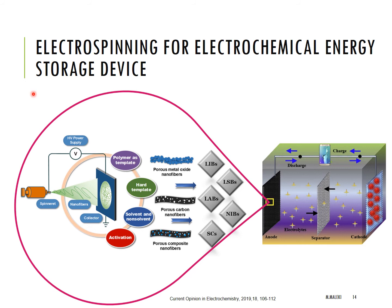We will now look at some slides showing energy applications of the electrospinning method. Electrospun nanofibers and composites are used in various electrochemical energy storage systems, such as lithium-ion batteries, lithium-sulfur batteries, sodium and potassium ion batteries, supercapacitors, and more.